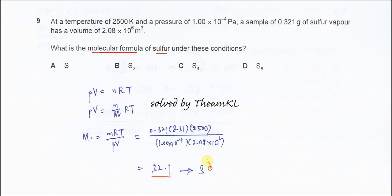32.1 is one sulfur. That's why the molecular formula is S. Just one sulfur only.